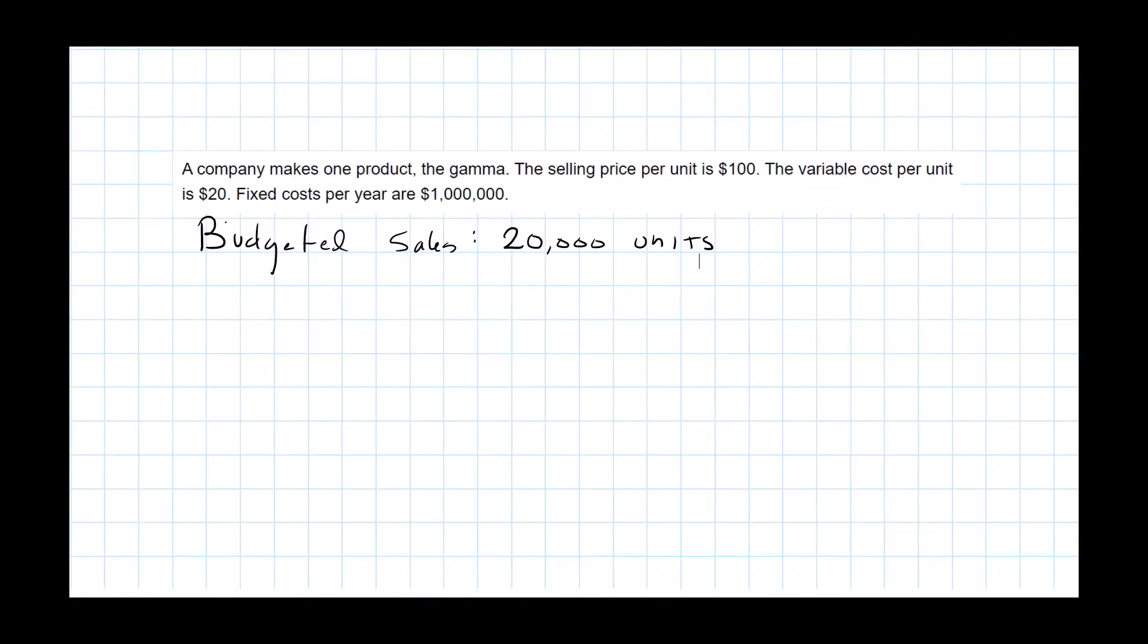Now that you understand the concepts of break-even point and margin of safety, let's practice calculating them. And to do that I've got some information from an activity that I found in the ACCA study hub. So after this video you could jump into the study hub and you can practice more of these activities on your own. With these figures let's do two things. Let's first calculate the break-even point and secondly we'll calculate the margin of safety if we assume their budgeted sales were 20,000 units.